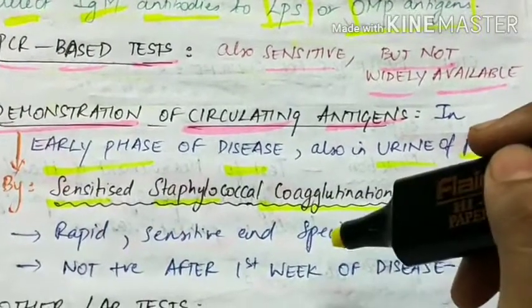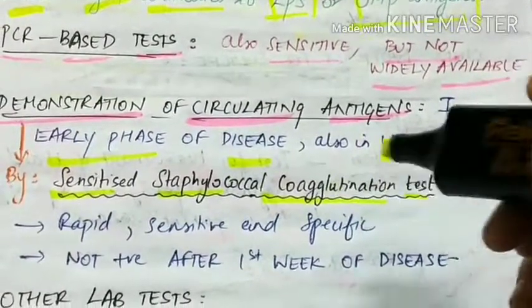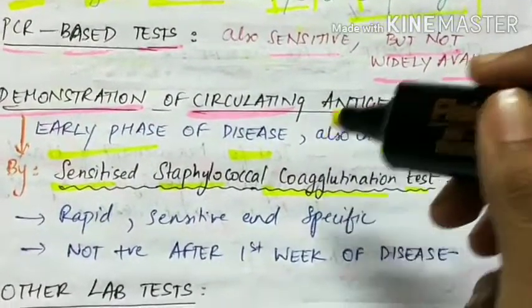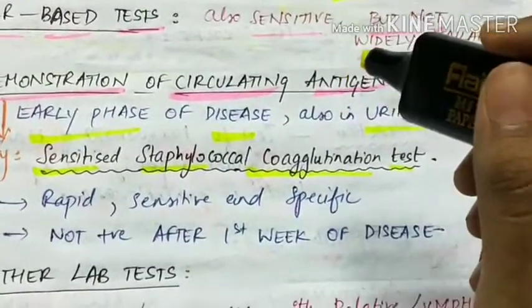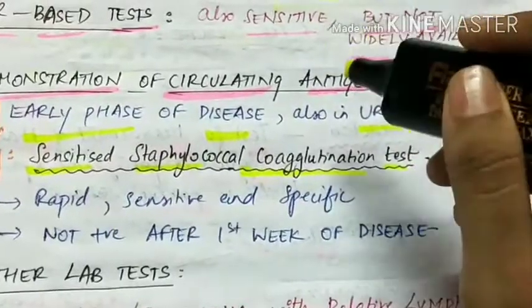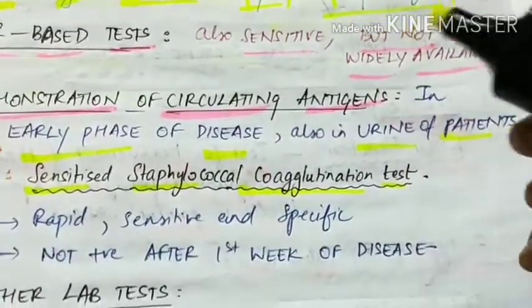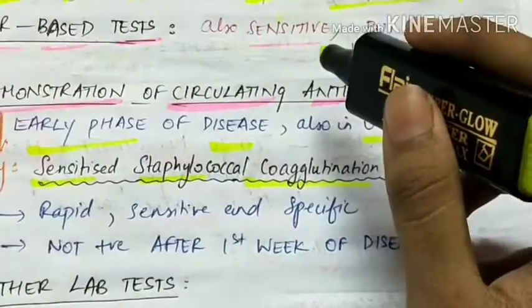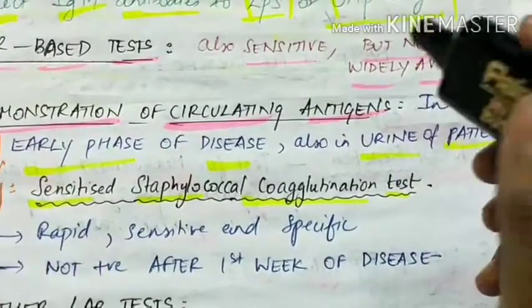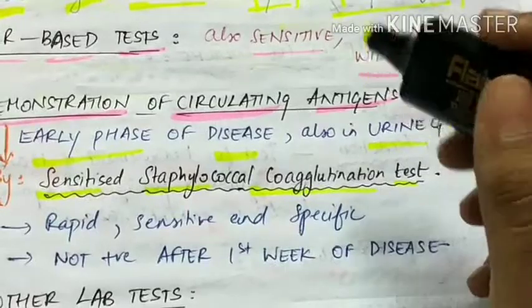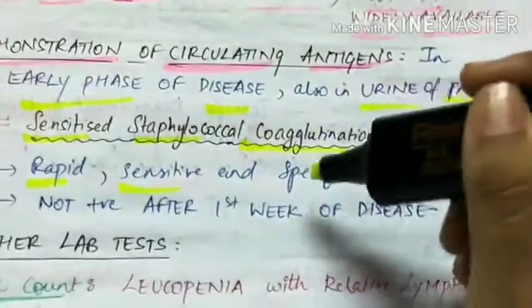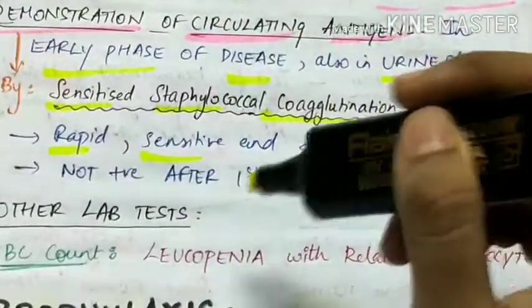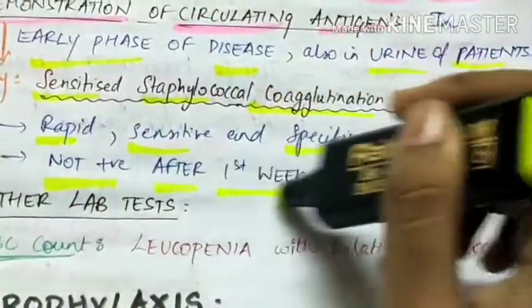In the sensitized staphylococcal coagglutination test, the Cowan 1 strain of Staphylococcus aureus, which contains protein A, is stabilized with formaldehyde and coated with Salmonella typhi antibody. When a 1% suspension of such sensitized staphylococcal cells is mixed on a slide with the patient's serum, the typhoid antigen in the serum combines with the antibody attached to the staphylococcal cells, producing visible agglutination within 2 minutes. This test is rapid, sensitive, and specific, but positive only in the first week of disease.